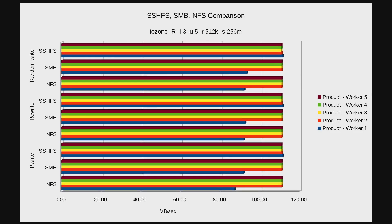Random write — again, SSHFS is just surprising me with how well it's performing. SMB and NFS are just about even; NFS is slightly slower but not significantly. SSHFS pegged, which is surprising because SSHFS actually outperformed SMB and NFS in the rewrite. So maybe that's not such a bad protocol to be using — it's certainly simple to set up. Then P-Write: it's pegged out again, and SMB is a little bit faster while NFS is a little bit slower.